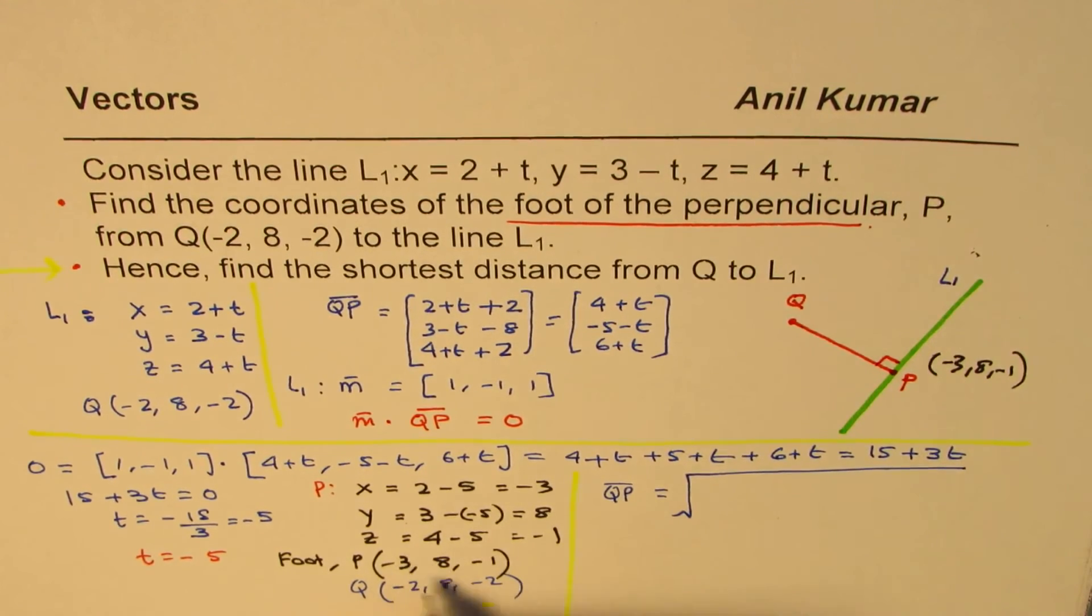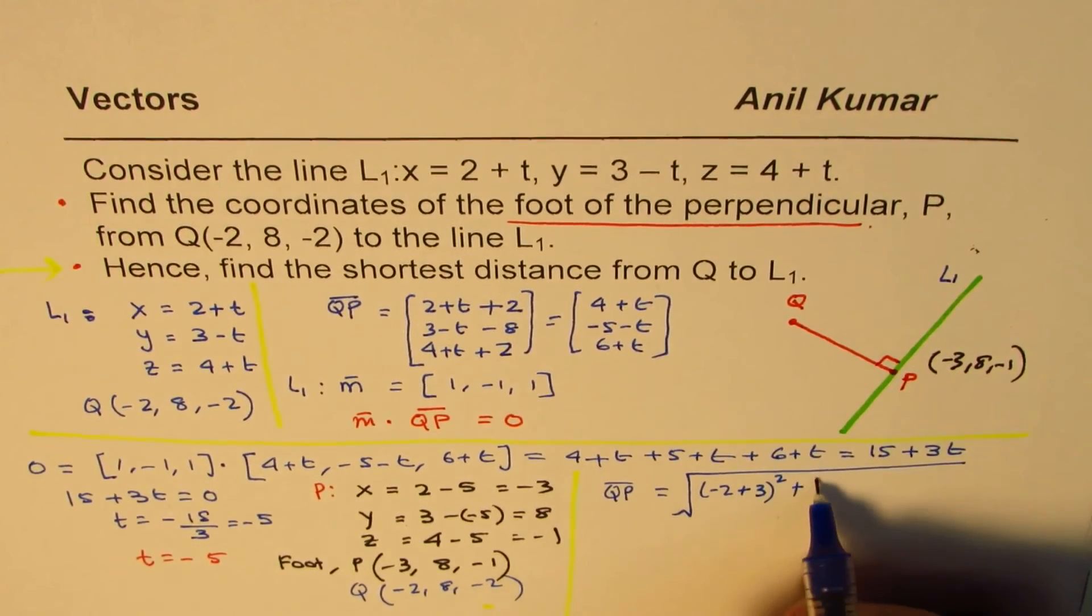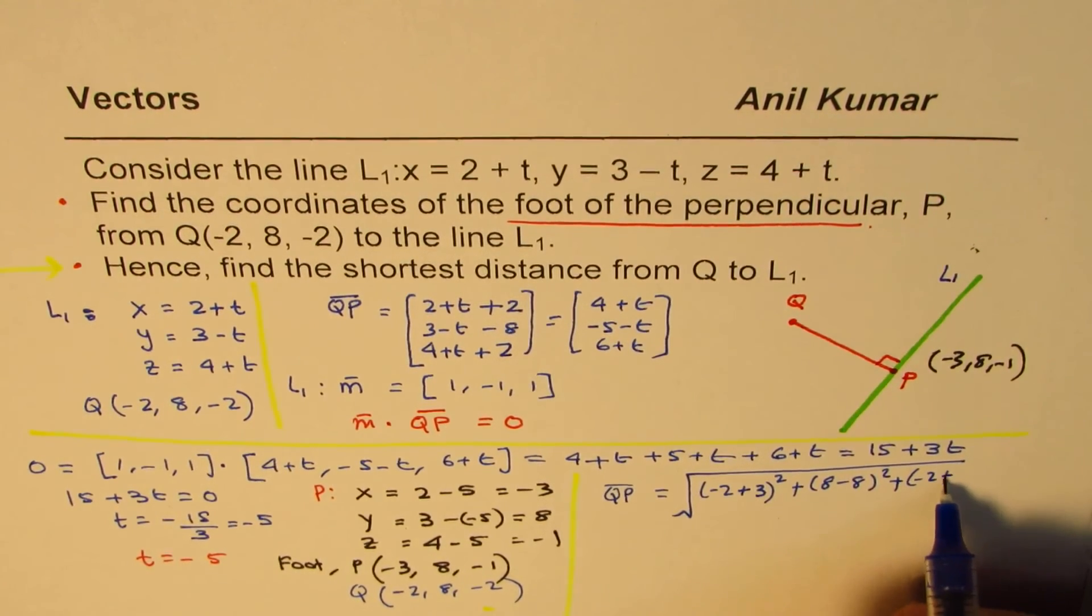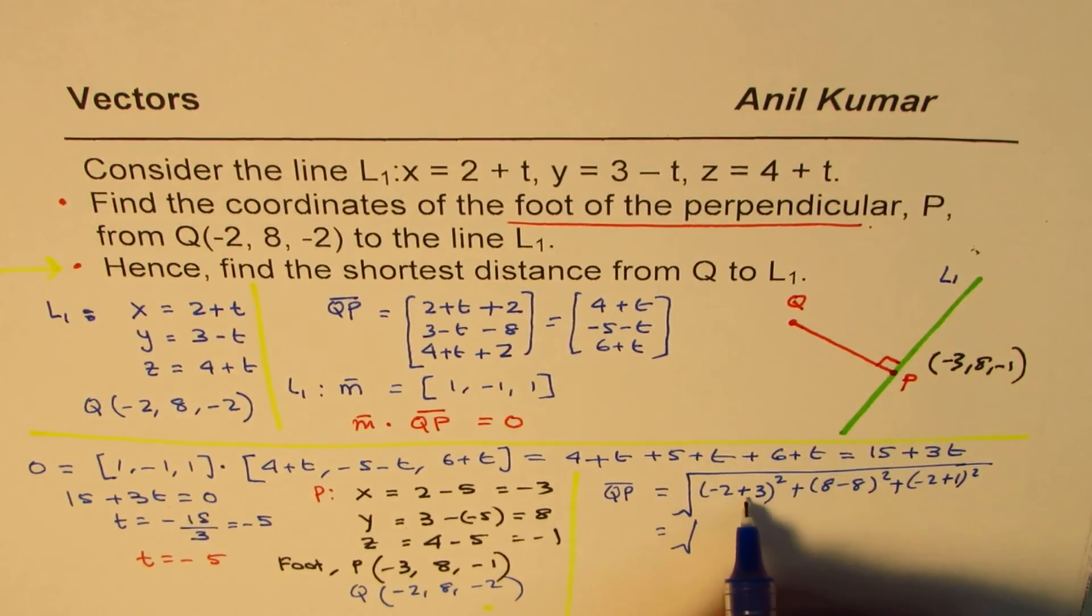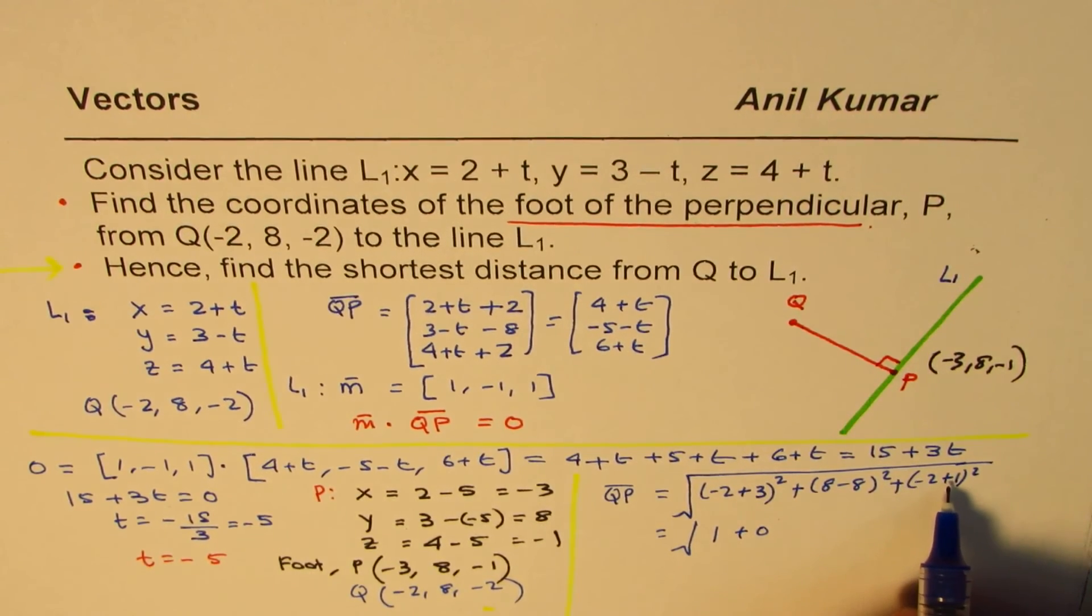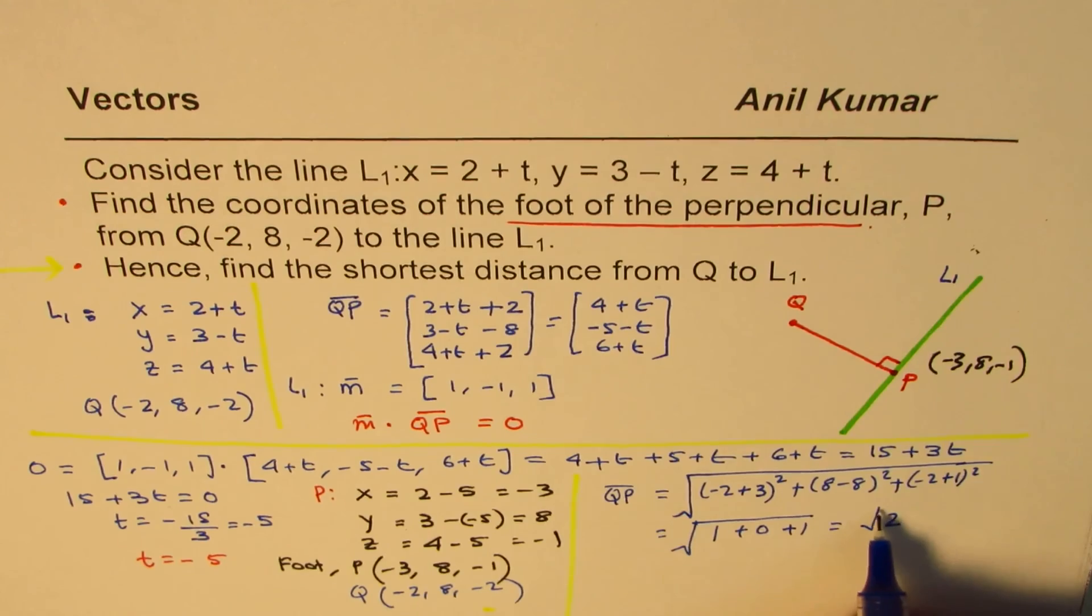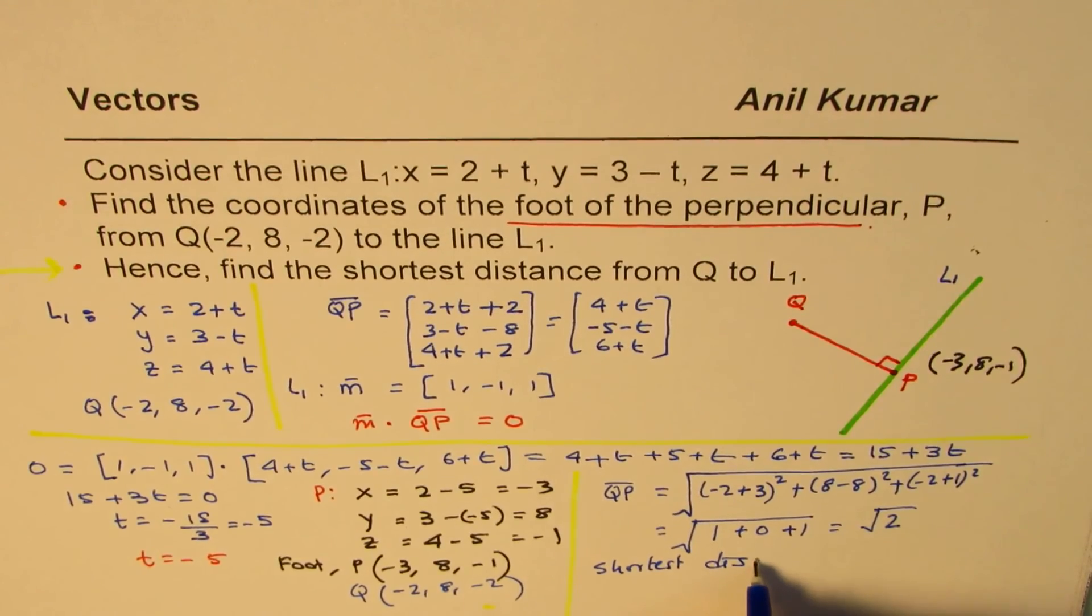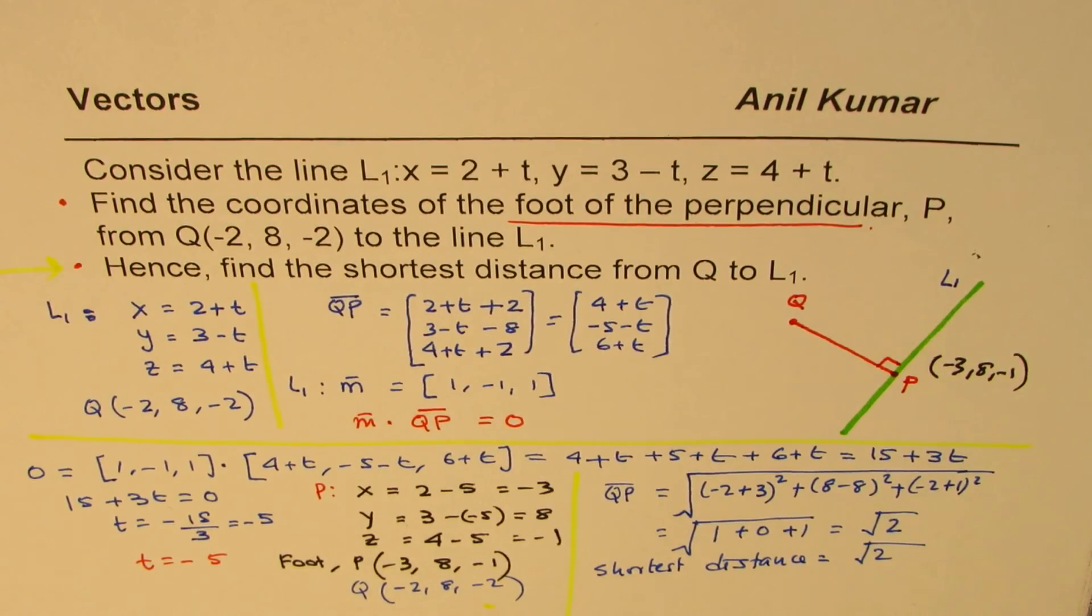So we say square root of (-2 minus (-3))² plus (8 minus 8)² plus (-2 minus (-1))². So that gives us, so -2 plus 3 is 1, so we get 1², 8 minus 8 is 0, -2 plus 1 is -1, again -1² is 1. So this is what we get, and that is square root of 2. So the shortest distance is square root 2. Distance equals square root 2. So that is how you can actually solve this question.